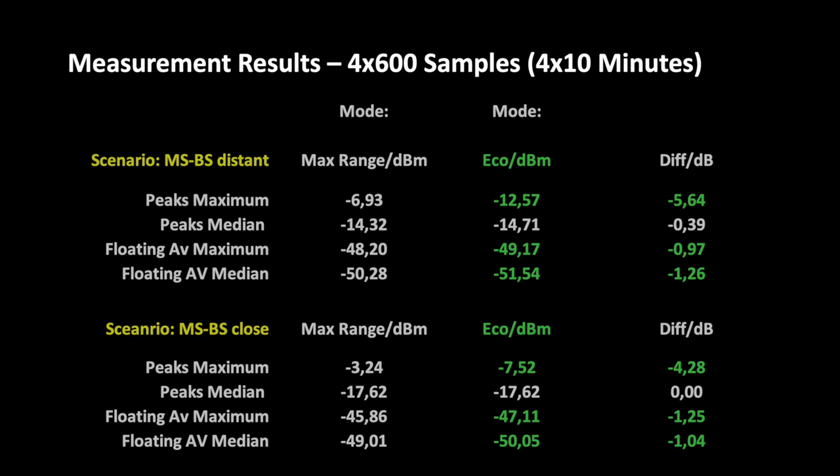Here we have a comparison of the measured field strength in maximum range mode and in the measured field strength in eco mode. I took two measurements each at a small distance from the base station of 1.5 meters and at a greater distance from the base station of 10 meters with a wall in between. The measuring device remains always fixed at a distance of 15 cm from the telephone. At the very beginning of a connection setup the handset transmits relatively strong peaks. The maximum and the median value of these peaks is given in the first two lines respectively.